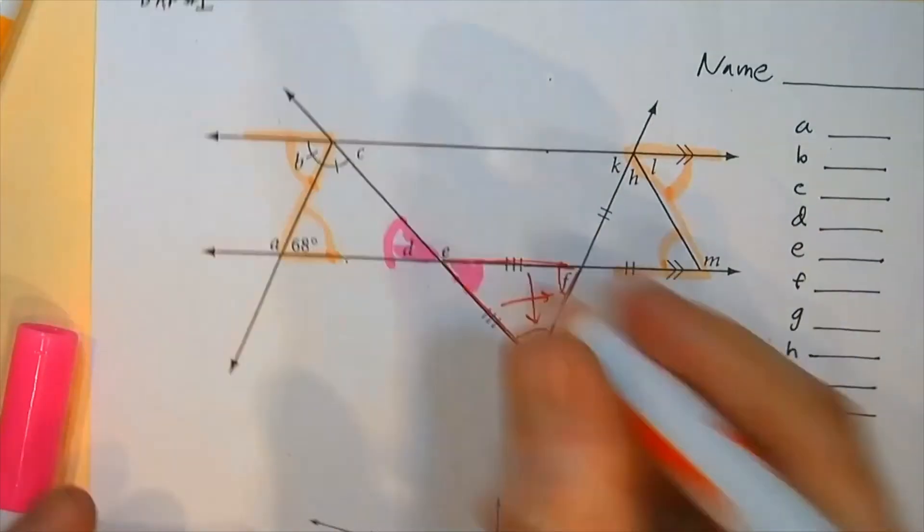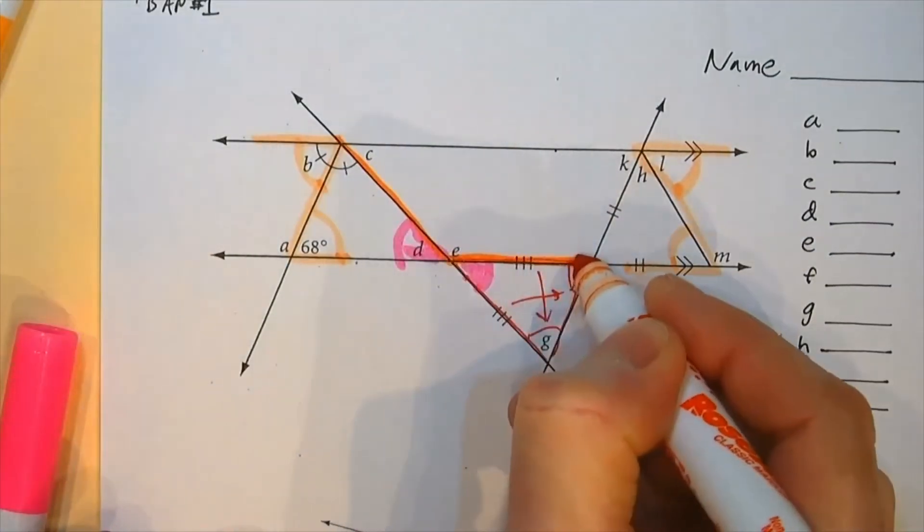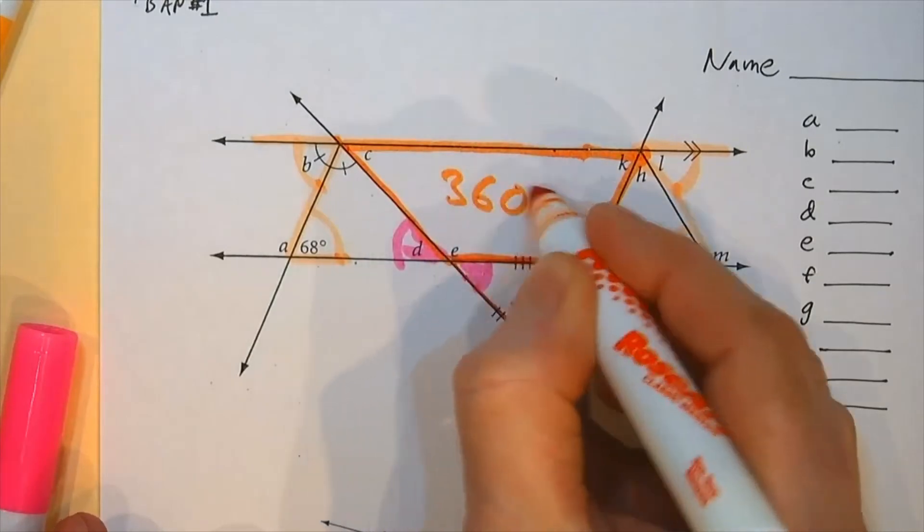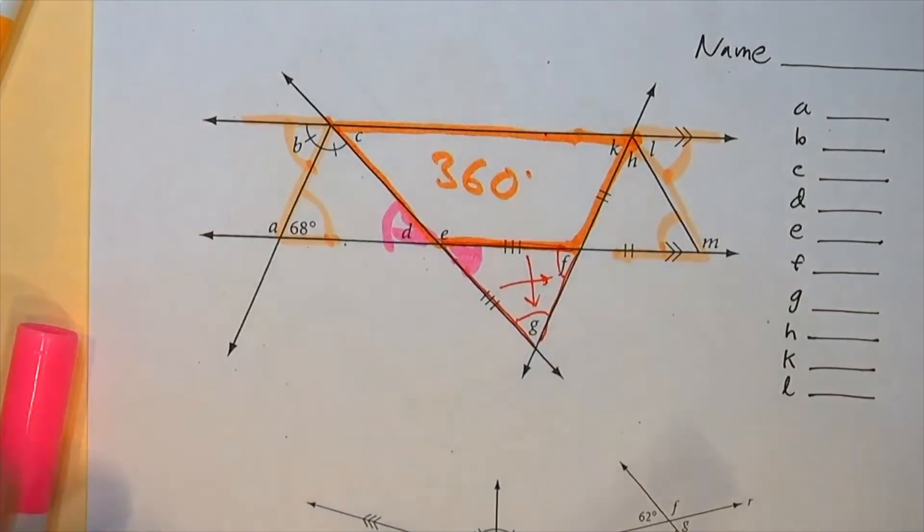I might even find something strange like, hey, here's a quadrilateral. That's 360. So my strategies could vary.